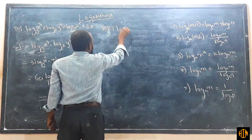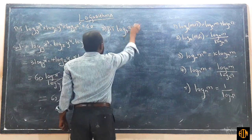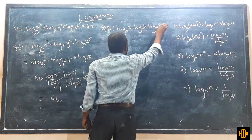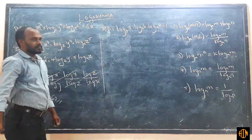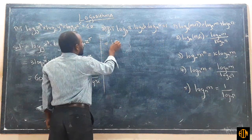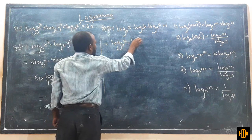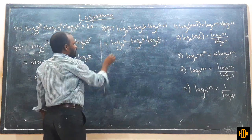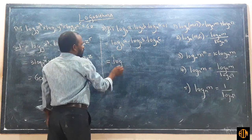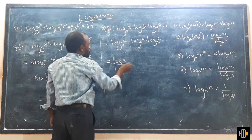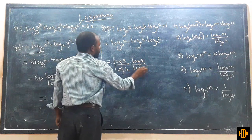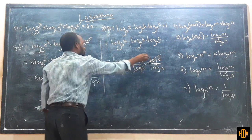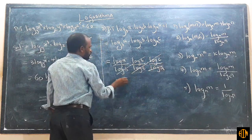Question 2: Prove that log A base B × log B base C × log C base A equals 1. Using Law 4, this becomes (log A / log B) × (log B / log C) × (log C / log A). Log C, log B, and log A all cancel, giving 1.